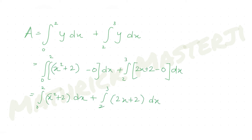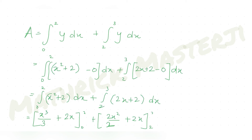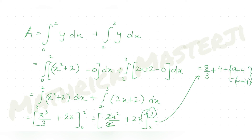Evaluating: the first integral gives [x cubed over 3 plus 2x] from 0 to 2, which is 8/3 plus 4. The second integral gives [x squared plus 2x] from 2 to 3, which equals (9 plus 6) minus (4 plus 4) equals 15 minus 8 equals 7.